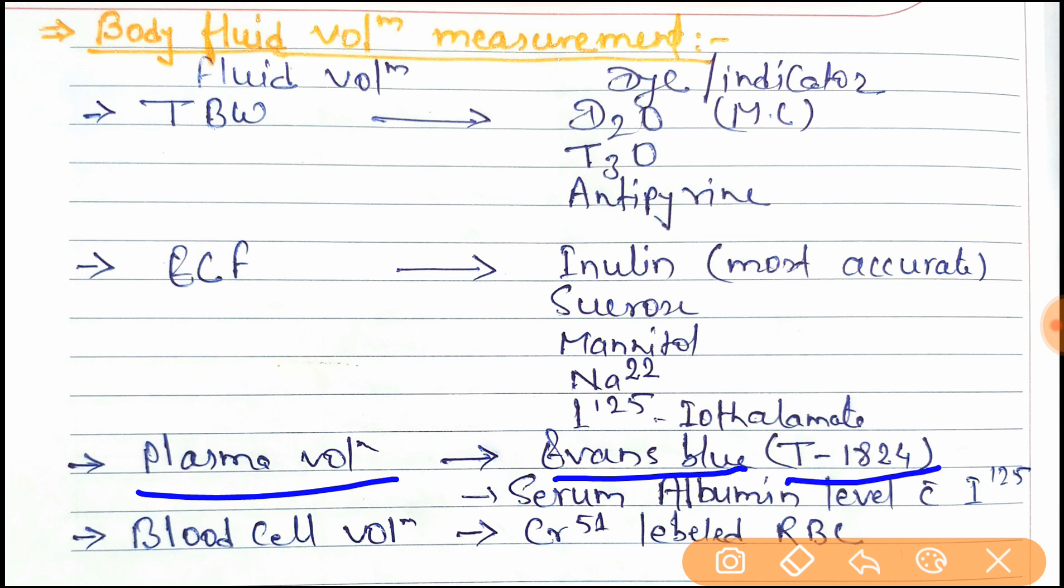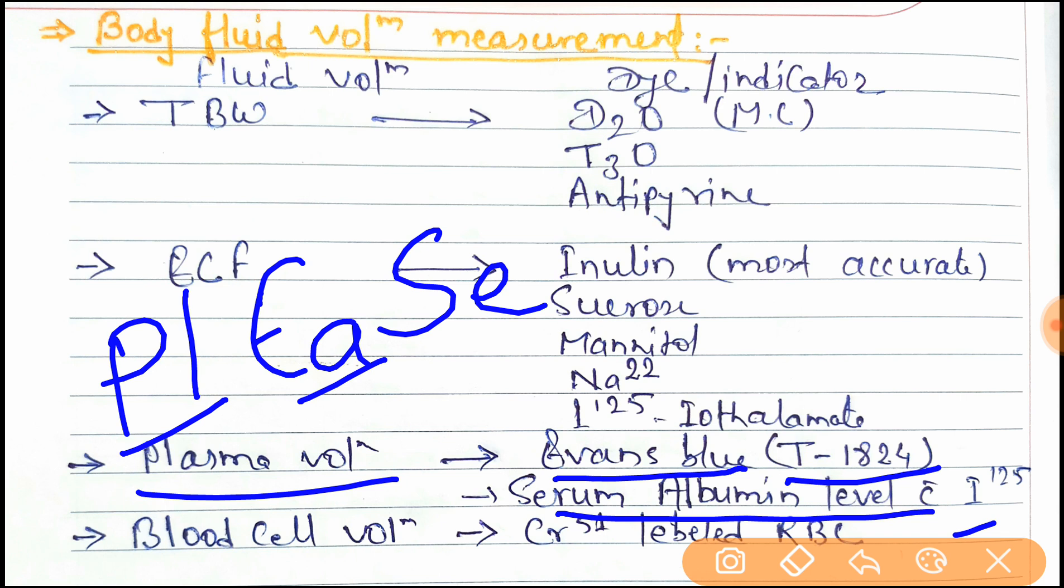The trick is 'Please' - PL for plasma volume, EA for Evans Blue, and SE for serum albumin.